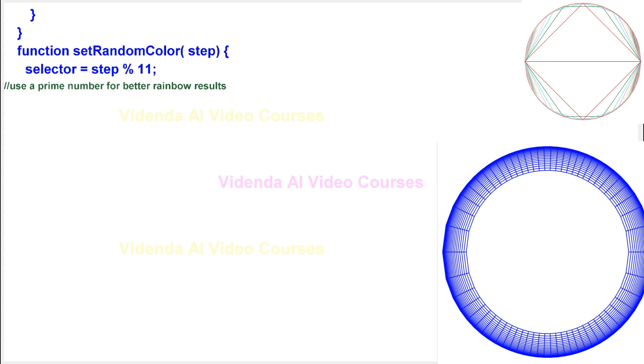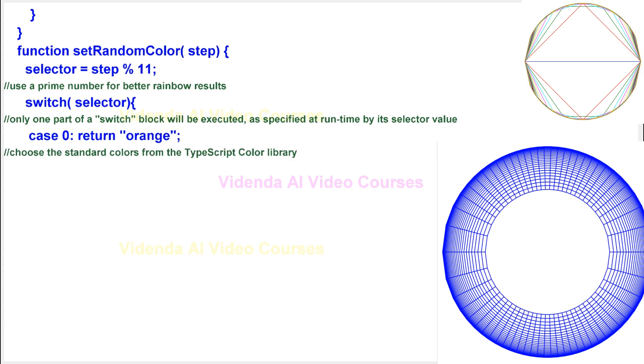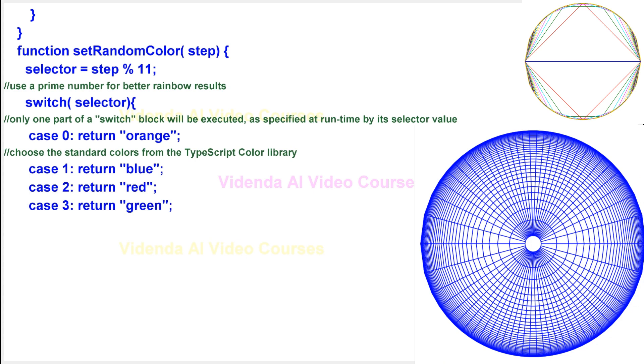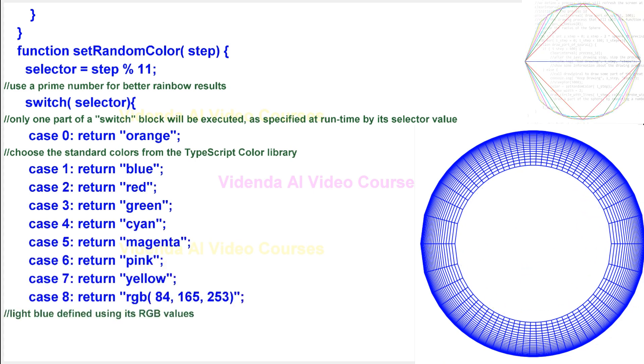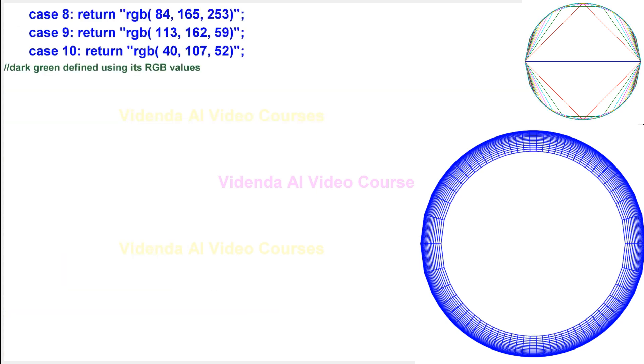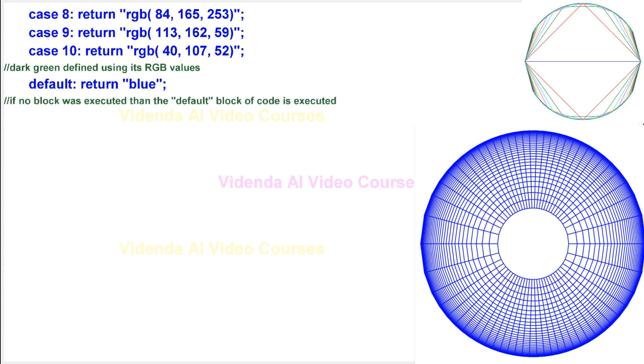Use a prime number for better rainbow results. Only one part of a switch block will be executed, as specified at runtime by its selector value. Choose the standard colors from the TypeScript color library. Light blue defined using its RGB values. Light green defined using its RGB values. Dark green defined using its RGB values. If no block was executed then the default block of code is executed.